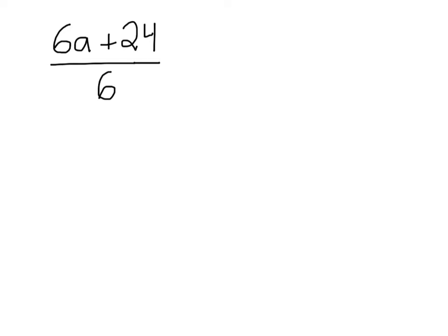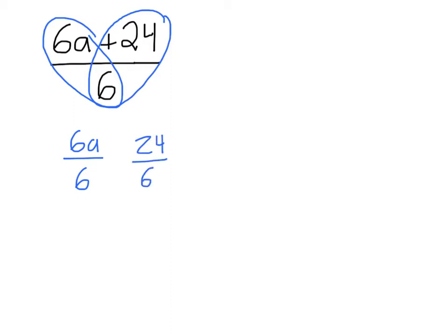So instead, we're going to split this into two terms. We make these hearts just to help us keep track of our terms. So if you tilt your head sideways, you'll see that we have 6a as our numerator and 6 as our denominator for our first term. Then we draw our second loop of our heart, and be sure to include the sign on the numerator. So we have a positive 24 over 6, and of course we put a plus between them because 24 over 6, as we said, is positive.